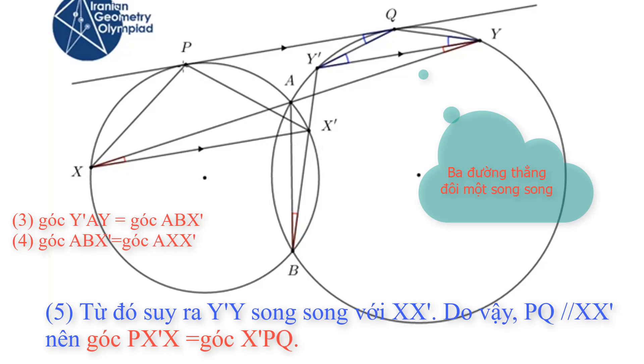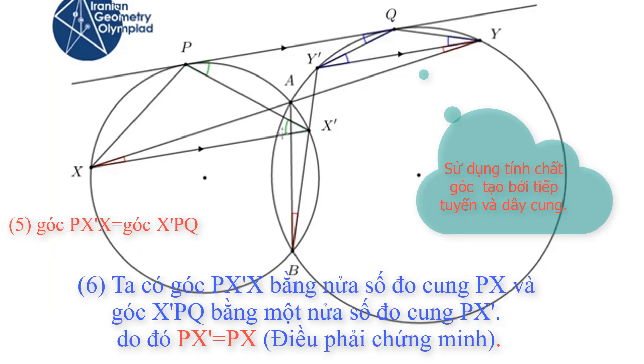And the angles PX prime X and X prime PQ are equal. But we know that this angle is half of the arc PX, and this angle is half of the arc PX prime. So these two arcs are equal, and therefore PX prime is equal to PX. And we proved our problem.